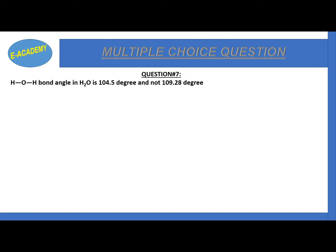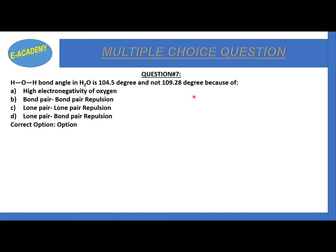Now question number 7 is: H-O-H bond angle in H2O is 104.5 degrees and not 109.28 degrees because of option A, high electronegativity of oxygen; B, bond pair-bond pair repulsion; C, lone pair-lone pair repulsion; D, lone pair-bond pair repulsion. Our correct option is option D, lone pair-bond pair repulsion.